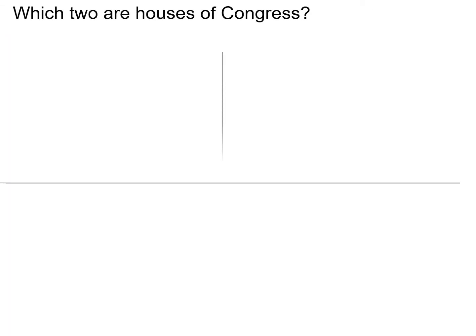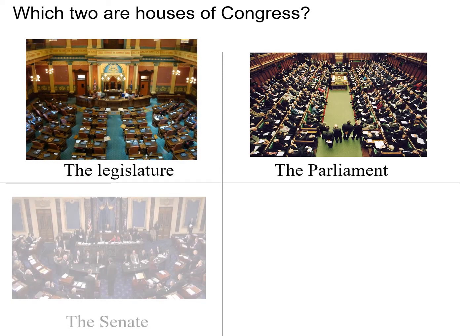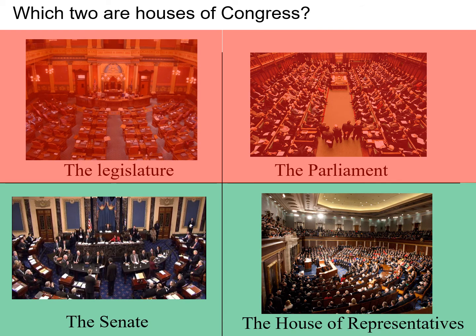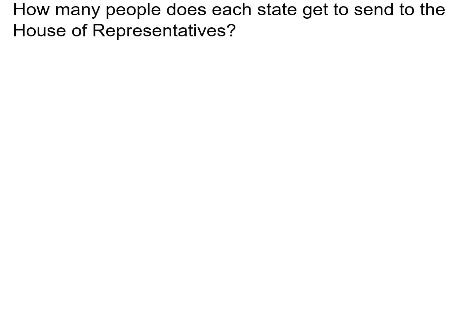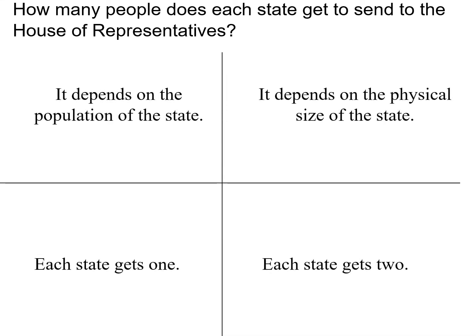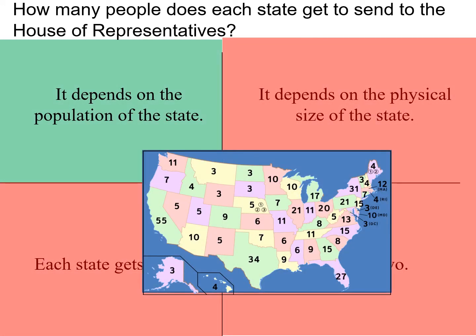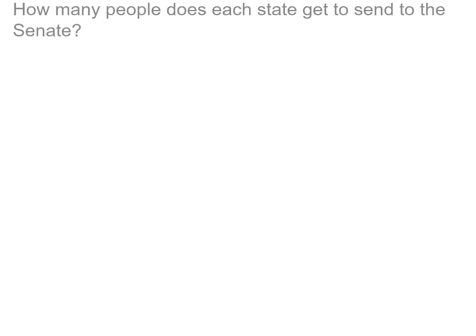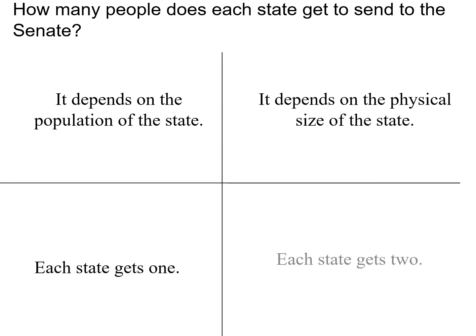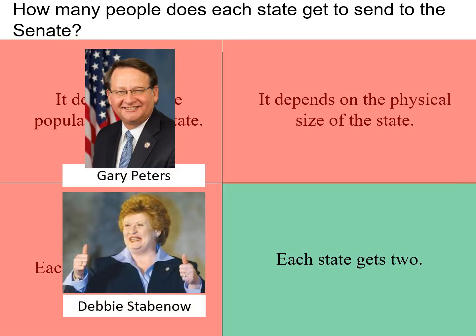Which are the two houses of Congress? The Senate and the House of Representatives. How many people does each state get to send to the House of Representatives? It depends on the population of the state. How many people does each state get to send to the Senate? Each state gets two.